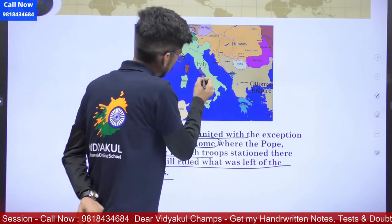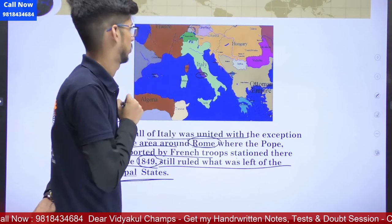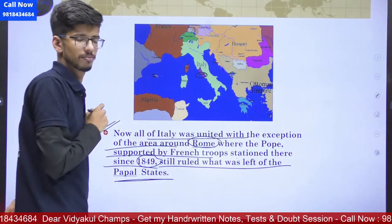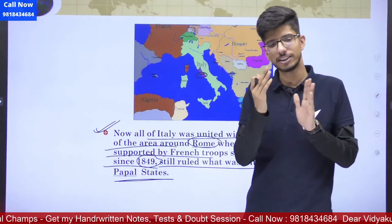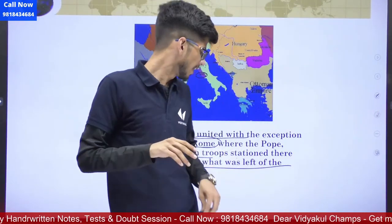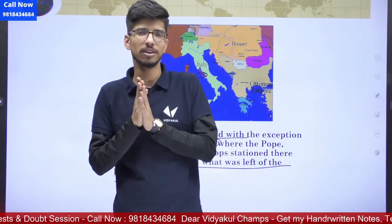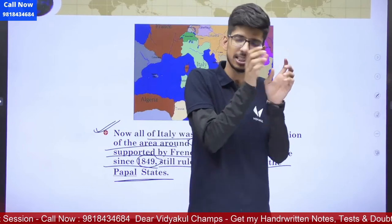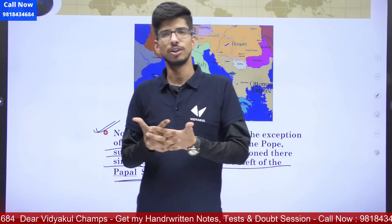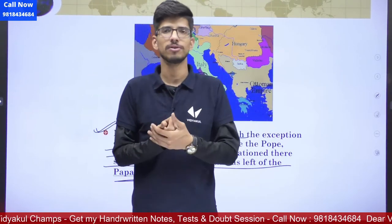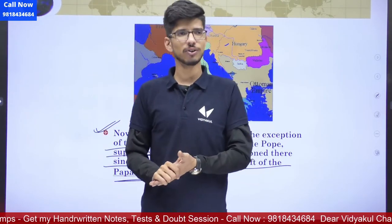After all these events, the kingdom of Italy under Victor Emmanuel II now stretched from Piedmont and Lombardy in the north to Sicily in the south, including all the old provinces with the exception of Rome and Venezia — because they were still under the Austrian Empire. All of united Italy was unified except the area around Rome where the Pope, supported by French troops since 1849, still ruled the remaining Papal States. By 1870 Rome was also incorporated, completing Italian unification.